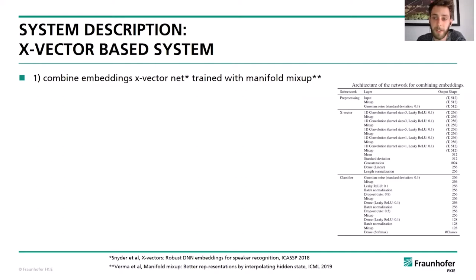The x-vector network consists of several convolutions in time and two intermediate layers that compute the mean and standard deviation of the output. Both values are concatenated into a single vector, which is then processed by a linear transformation and length normalized — these are the x-vectors. To train the network, these vectors are used for classification, but after training only this intermediate layer is used to extract the x-vectors, giving us a way to combine all Look, Listen and Learn embeddings from one audio file into a single vector.